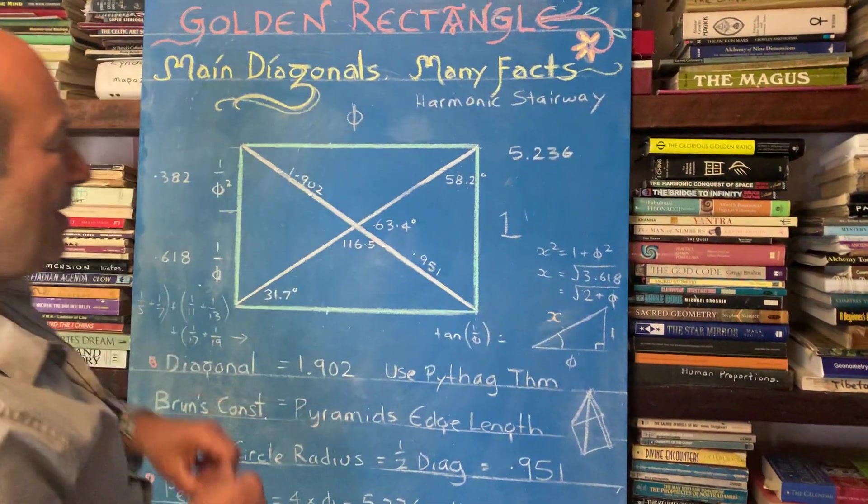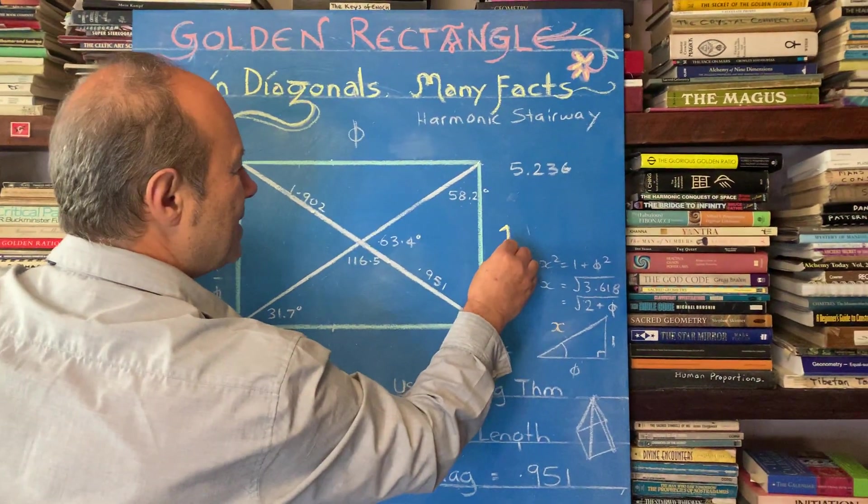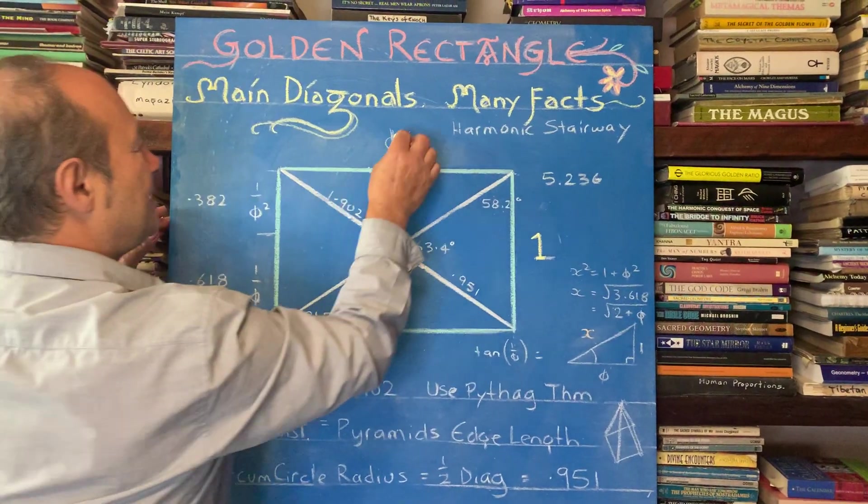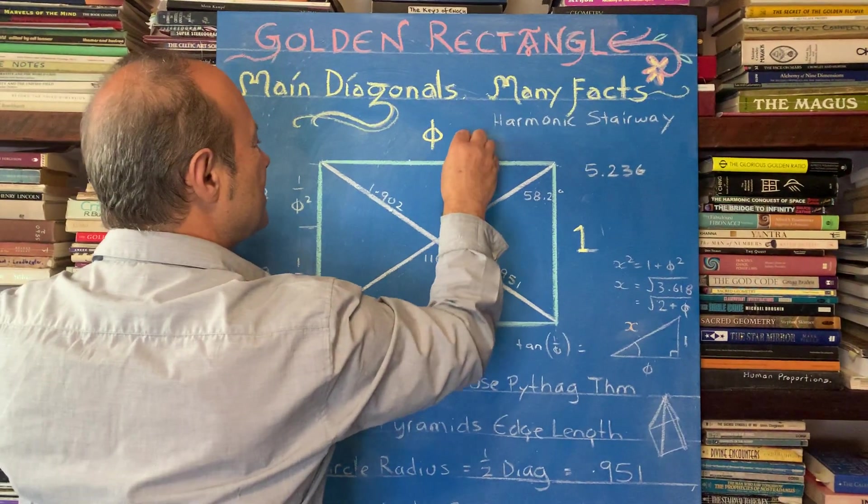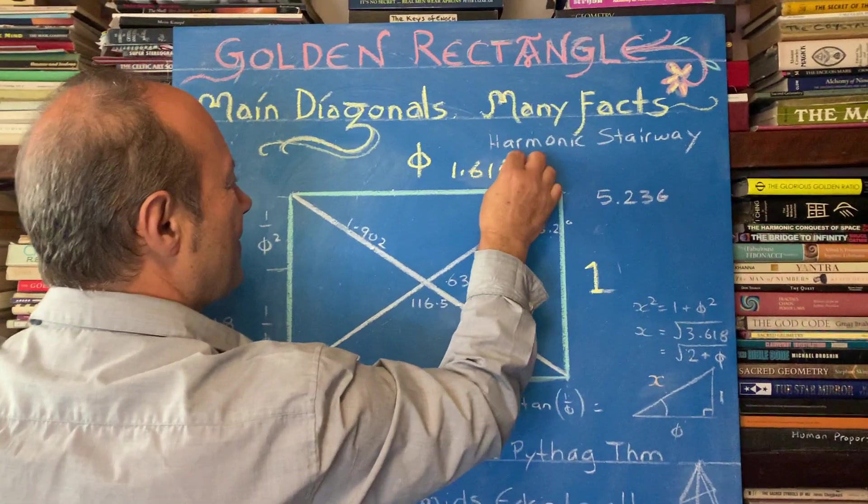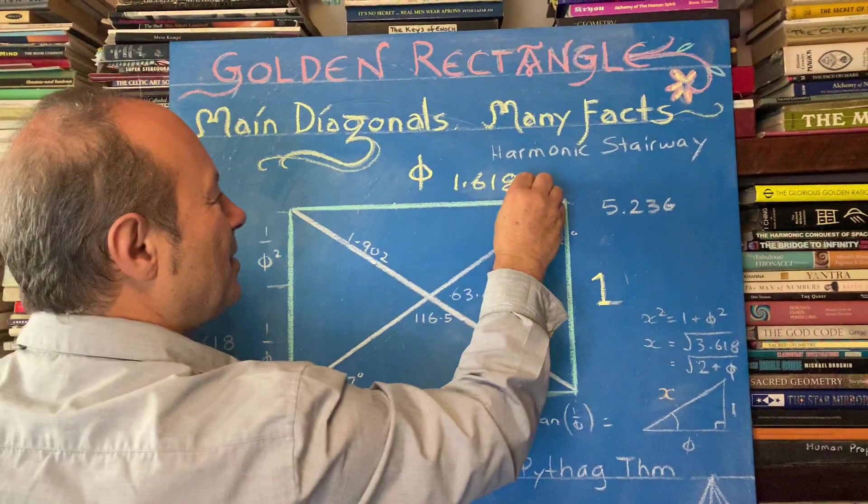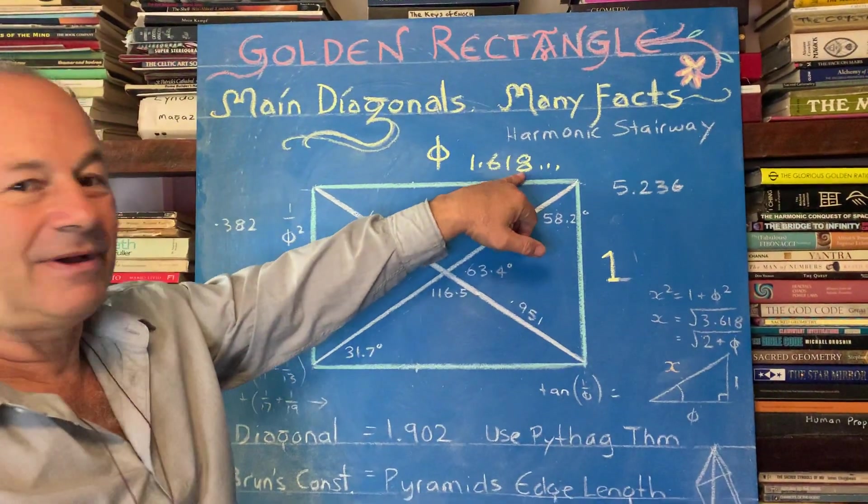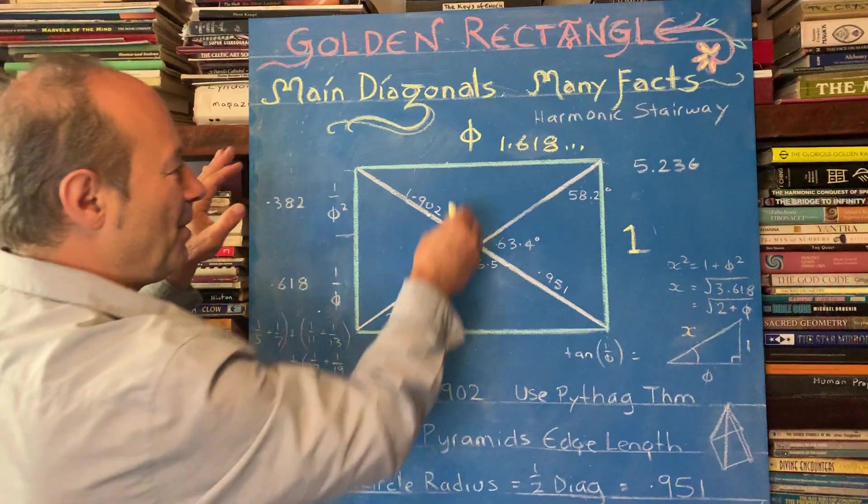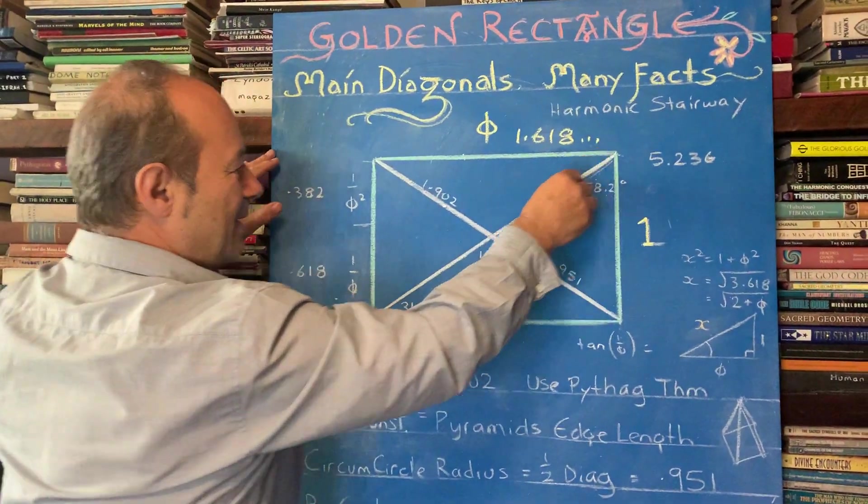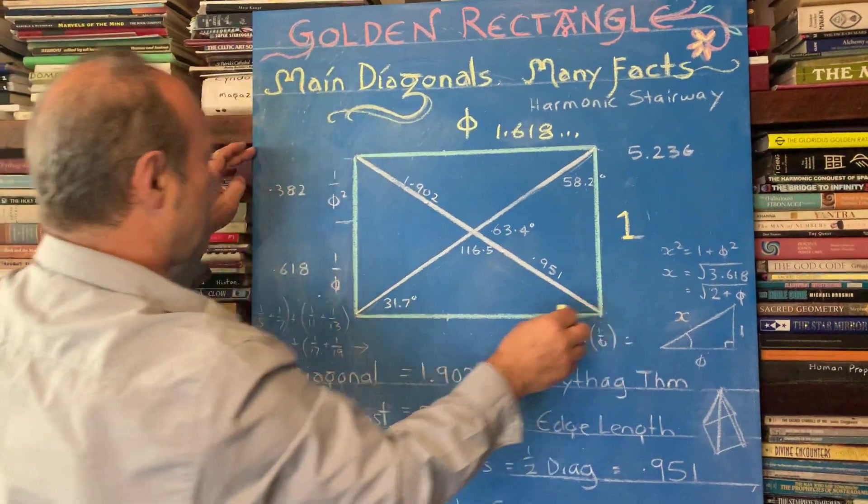And so we're going to call this 1. That's the width. And the longest side is called phi. So we know that this is 1.618. And we put three dots because that means it goes forever without any recursion. I'm not going to draw the squares. I just want to show you that we're going to look at this and we're going to look at that.